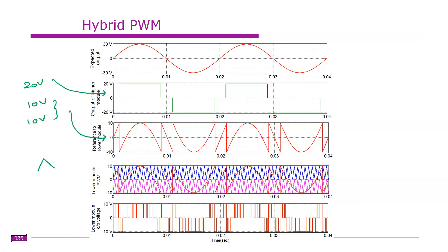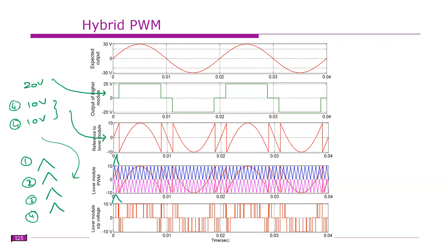You require four carrier signals in total. Carriers one and two control the first H-bridge of the low voltage side, and carriers three and four control the second H-bridge of the low voltage side. So this is carrier one, two, three, and four. You have four switches in the first H-bridge and four switches in the second H-bridge, and all eight switches are controlled by these four carrier signals.